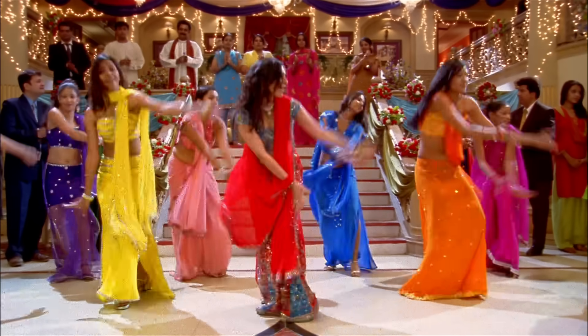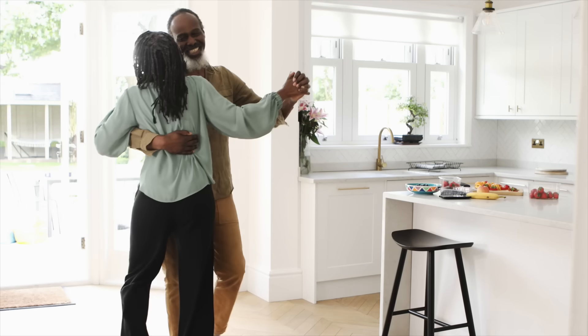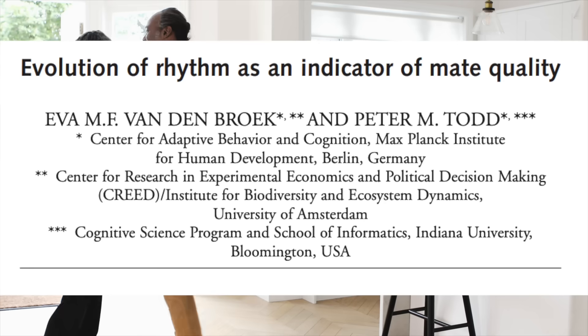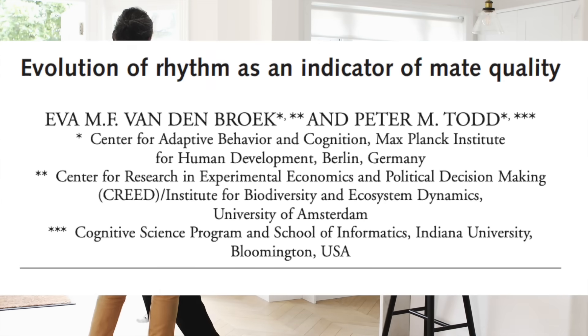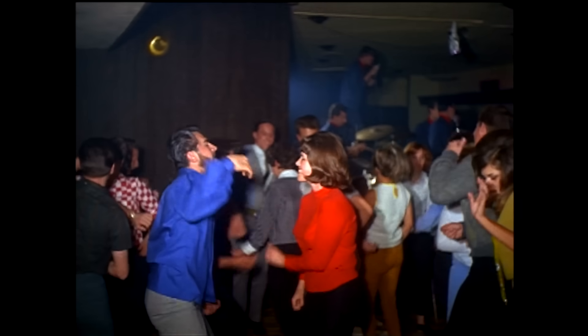Our ability to identify a pulse and entrain to it is likely evolutionarily important for humans. Because if we're all moving in the same way, we can establish a collective identity, instill trust, and strengthen social bonds. This can also be important in attracting mates. Charles Darwin was among the first to note that among many species, mating calls are often regular and repetitive — because, as we all know, repetition legitimizes. A potential mate's ability to regulate their movements to a pattern could signify how well their brain works. Better brain, better mate.